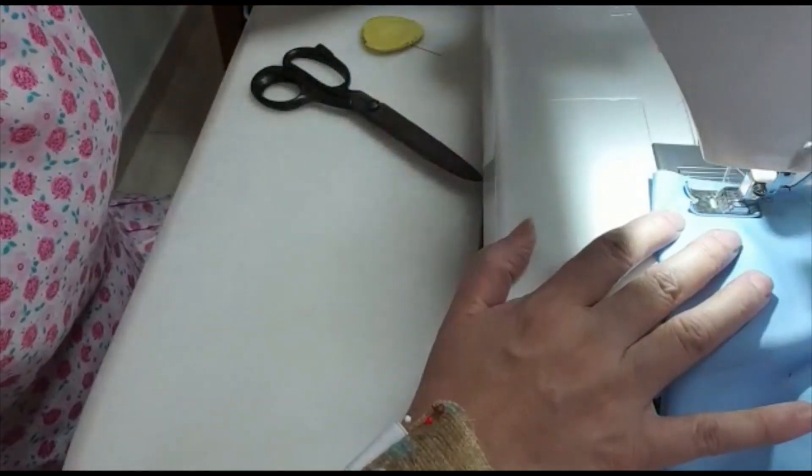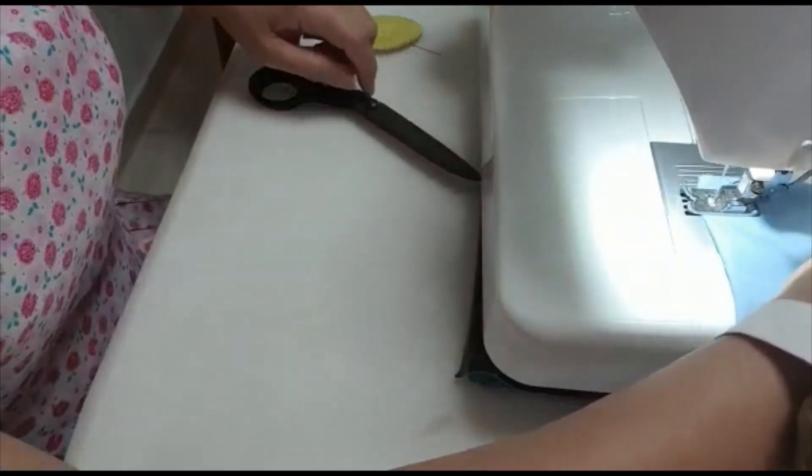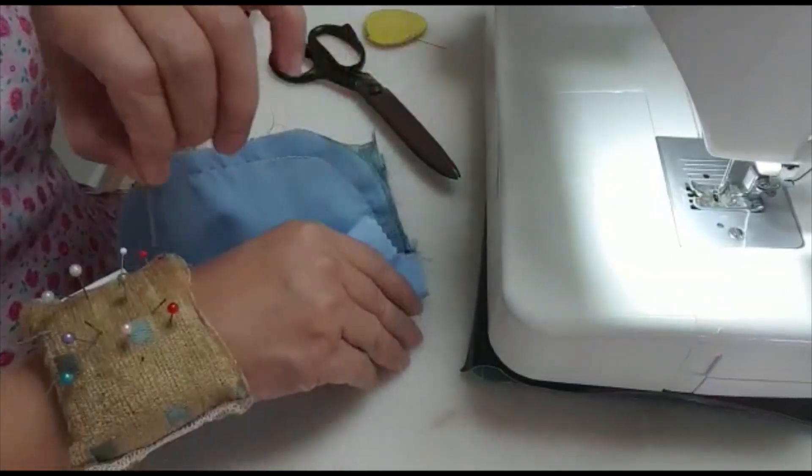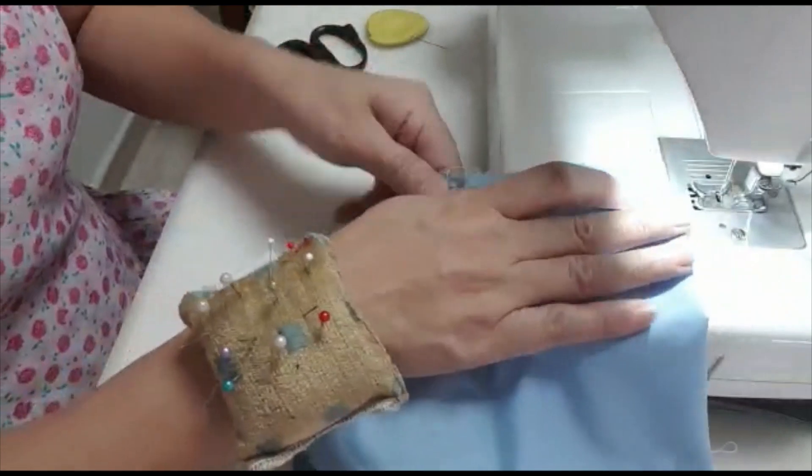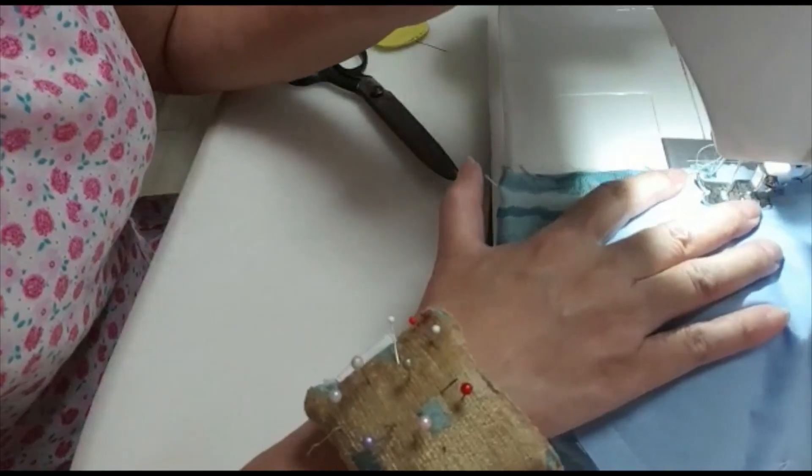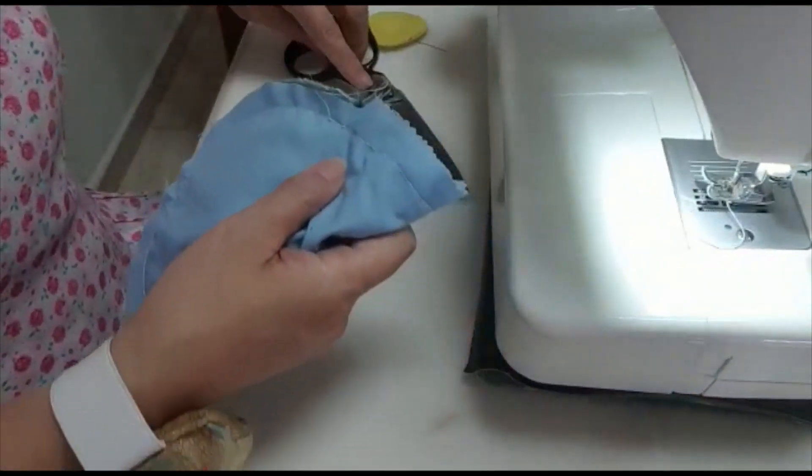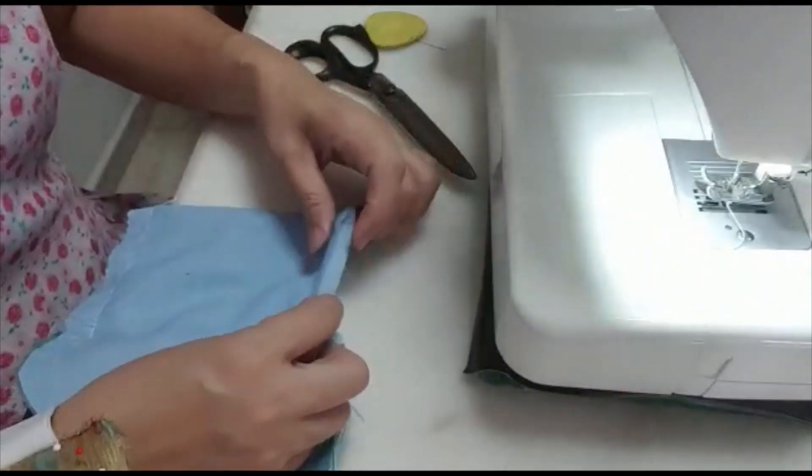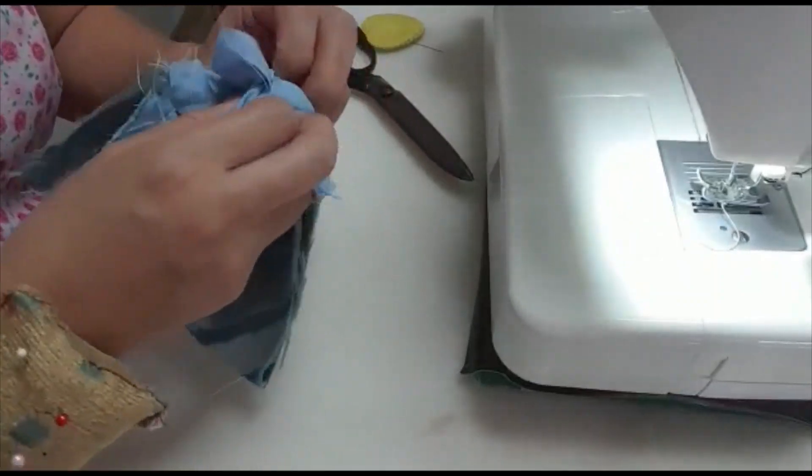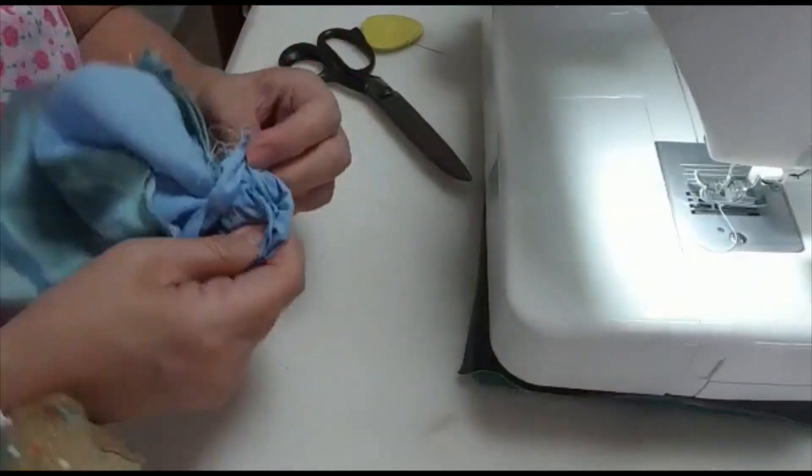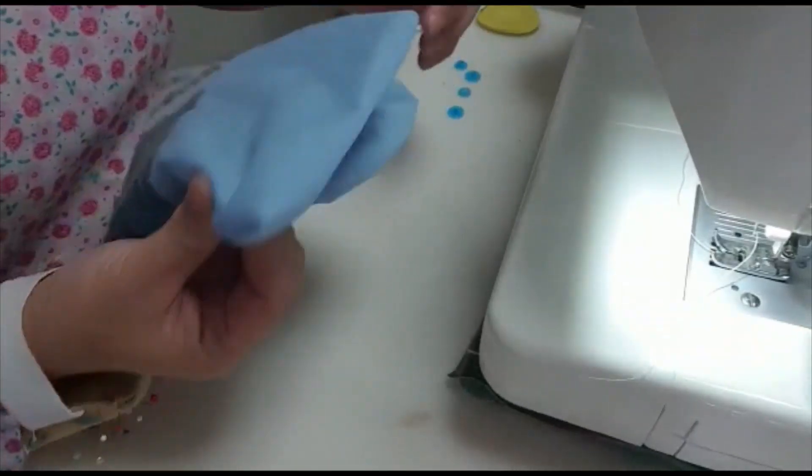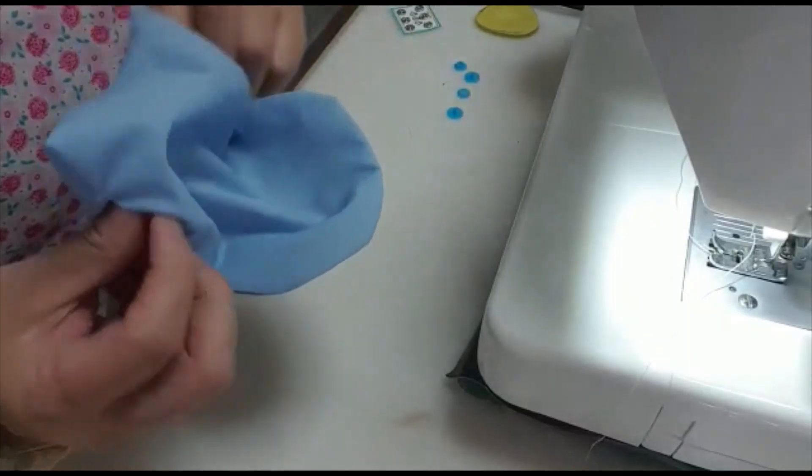This side and this side you can sew all the way down. We only need one small little hole. Stop where you start just now. After this there's a little hole. Turn the whole thing from this little hole, do it slowly. Now I have turned the whole thing over.